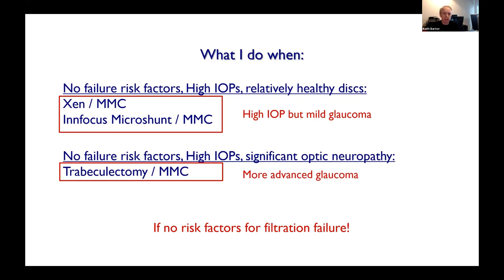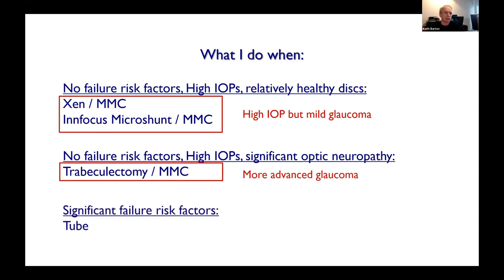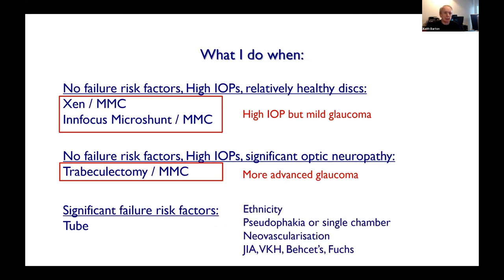The risk-factor patients — basically everyone else — get a tube: Black patients, pseudophakic single-chamber eyes, neovascular, JIA, VKH, Behçet's — the ones where trabeculectomies just don't do well.